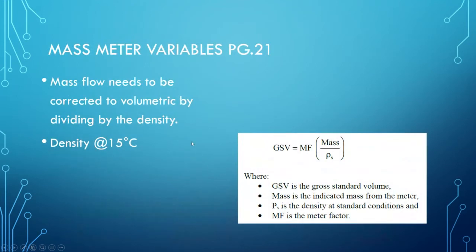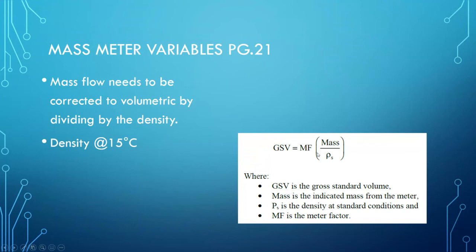For mass meter variables with liquids, mass flow needs to be corrected to volumetric by dividing by the density. Density is referenced at 15 degrees Celsius. The flow computer calculates gross volume by multiplying the meter factor by the ratio of mass to density at standard conditions. This is what the flow computer does for us automatically.